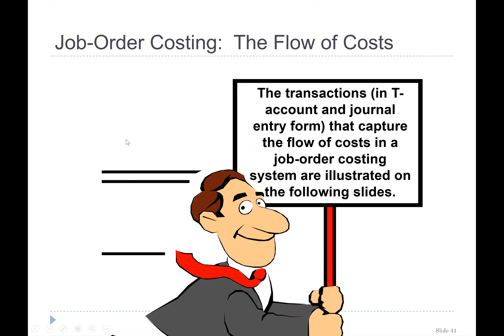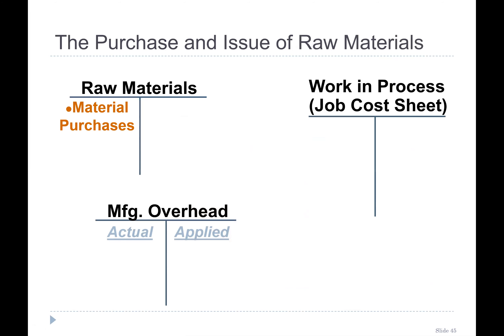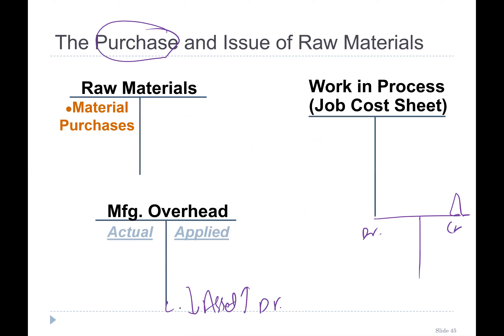Let's talk about the flow chart. When raw material is purchased, we use T-accounts. Recall that in T-accounts, the right-hand side is credit and the left-hand side is debit. Assets increase on the debit side and decrease on the credit side. When raw material is purchased, raw material — which is an asset — increases, so it is debited. Cash decreases or accounts payable increases on the other side.